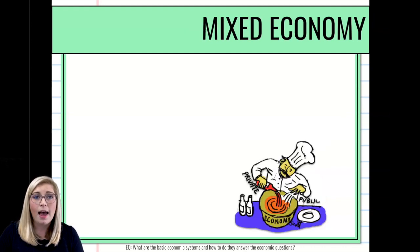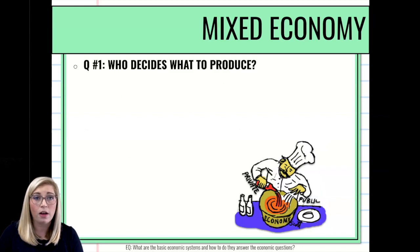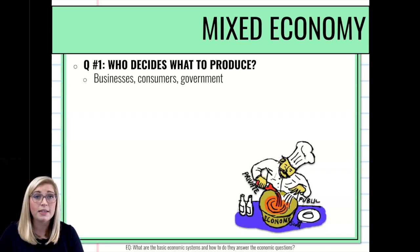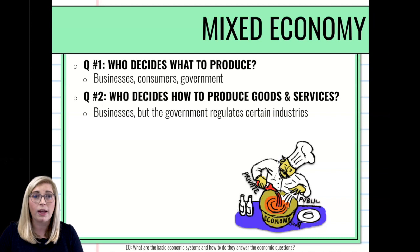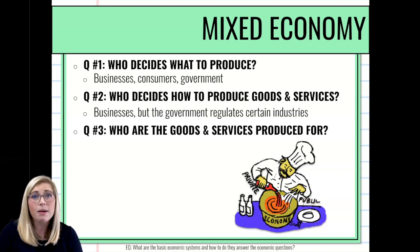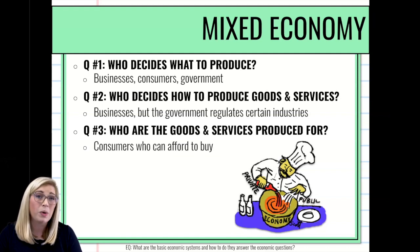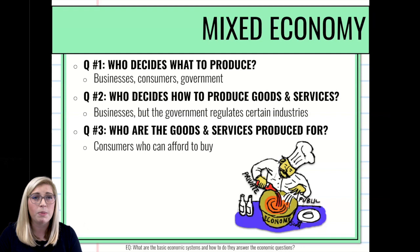Lastly, we have our mixed economy. As the name suggests, it is a mixture of all the different types of economies. Who decides what to make comes down to businesses, consumers, and a little bit of the government. How are we going to produce it comes down to businesses and the government — there will be some government regulation but also freedom on the business side. Who are the goods and services produced for? It depends on who can afford to buy it, though in certain situations it may come down to an equity issue and goods distributed to different people, depending on the business, the government, and the type of good.